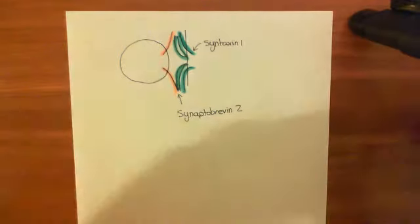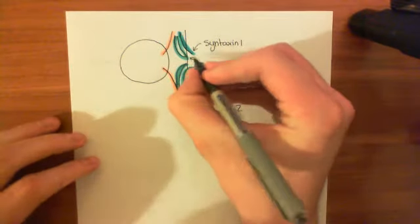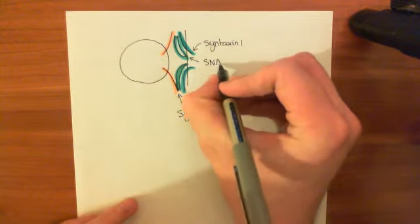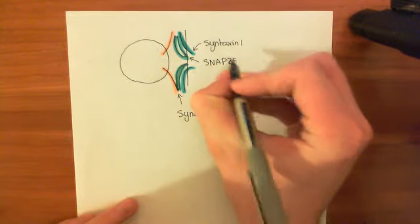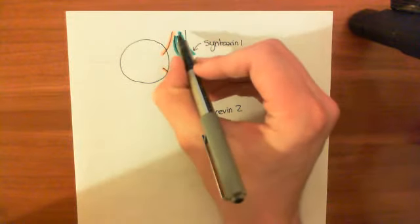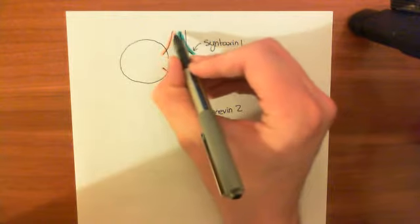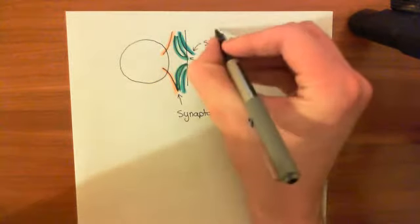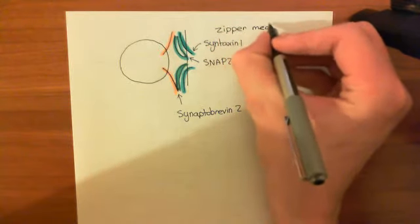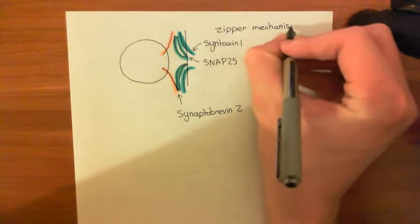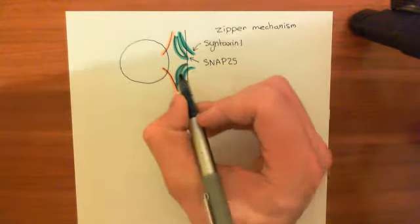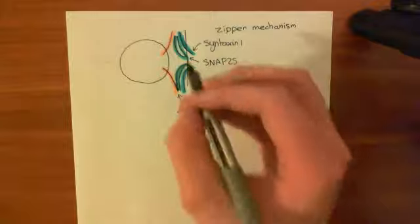Overall, what happens is these SNAP25 proteins together provide four alpha helices which are going into the cytoplasm. What happens is these alpha helices wrap up together, and the wrapping starts at these three tips and then makes its way down in the so-called zipper mechanism. You zip up these alpha helices together, which has the result of pulling the membrane of the vesicle very close to the membrane of the plasma membrane. That docks the synaptic vesicle at the plasma membrane.